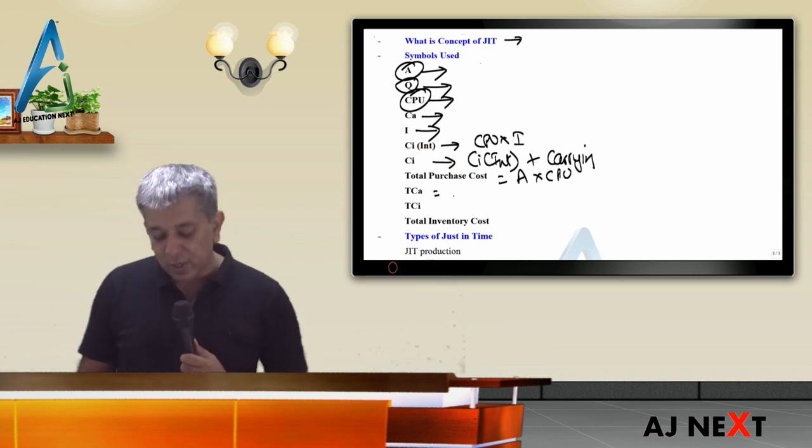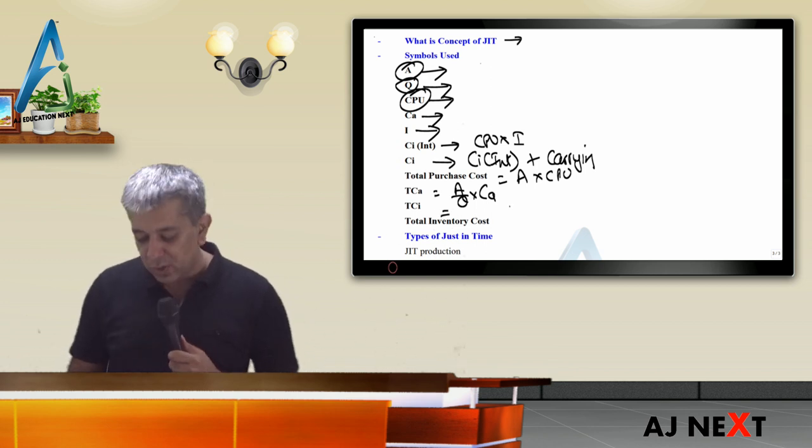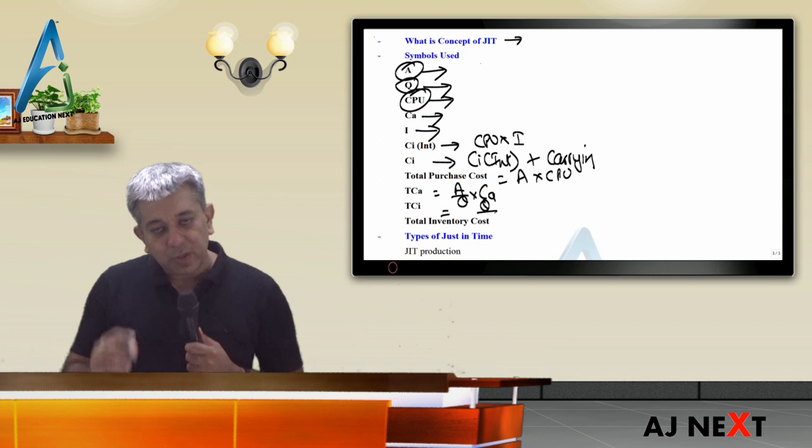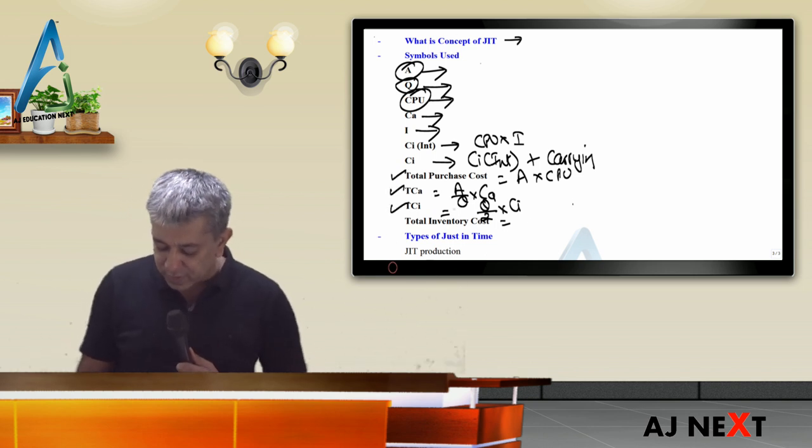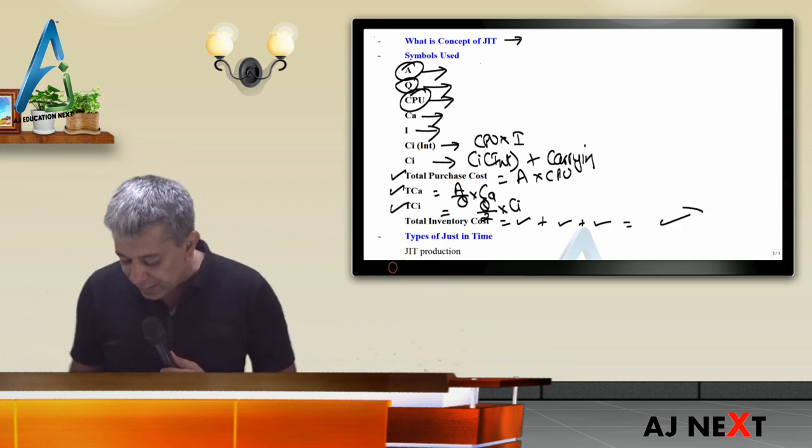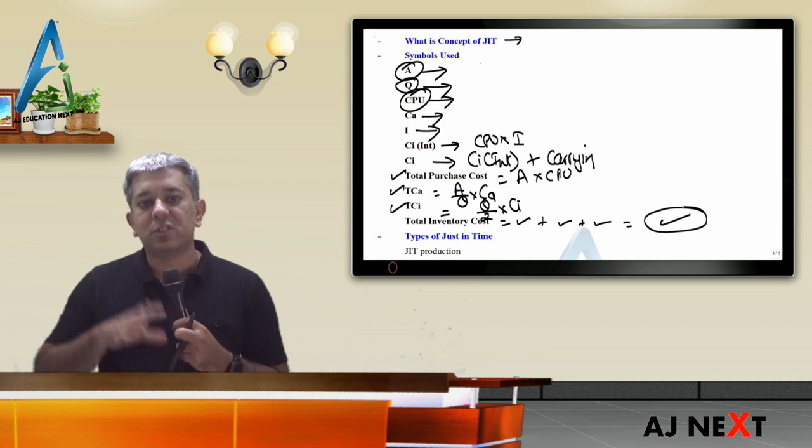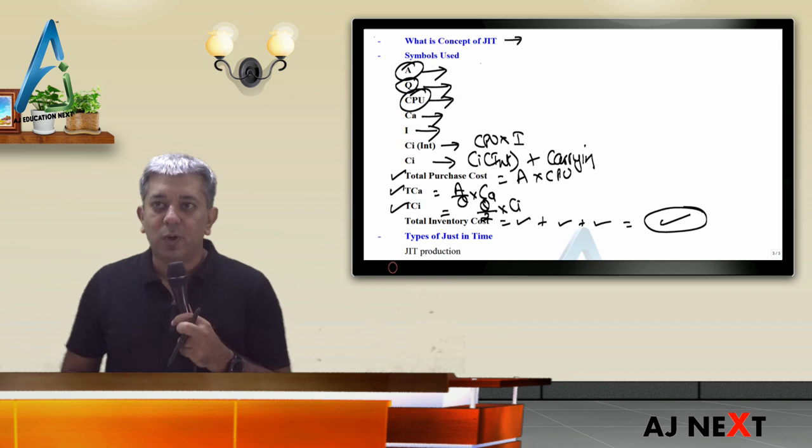But then a lot of my expenses are also saved. If I had ordered books earlier, space would be needed, rentals and costs would rise. Apart from that, there might be extra stocks. And for subjects like Tax or IDT, if books don't sell for one year, it will become waste for us. So that is just-in-time.